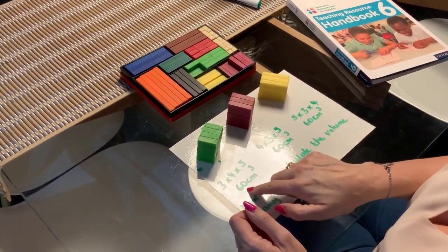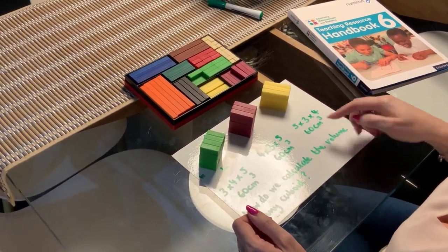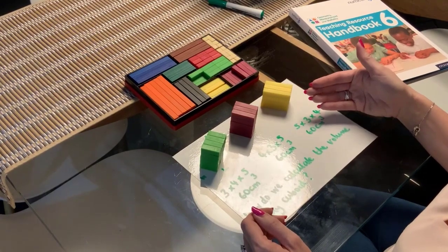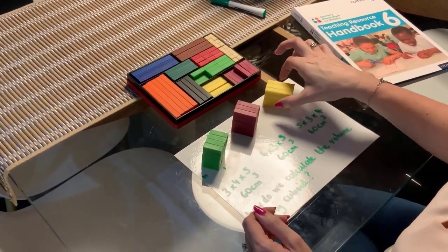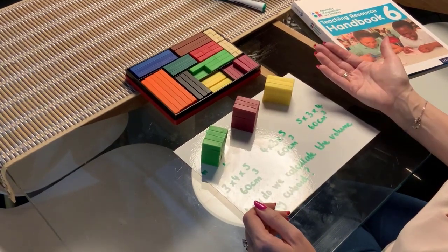So obviously 60 centimeters for this one, and they realize that this one is also 60 centimeters, and so is this one. So it's the same calculation, but in different order. And we could actually, if we wanted to turn that one upright, we'd see that actually those would be the same cuboid.